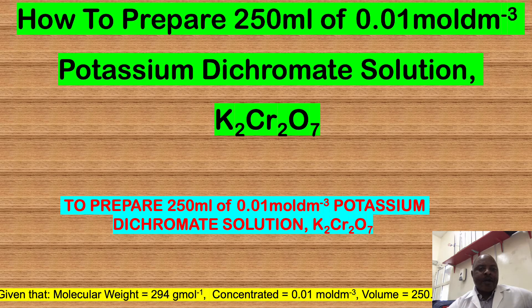Welcome to the Department of Chemistry at DCS. Today I will give you a brief summary on how to prepare 250 ml of 0.01 mol/dm³ potassium dichromate solution in the laboratory.